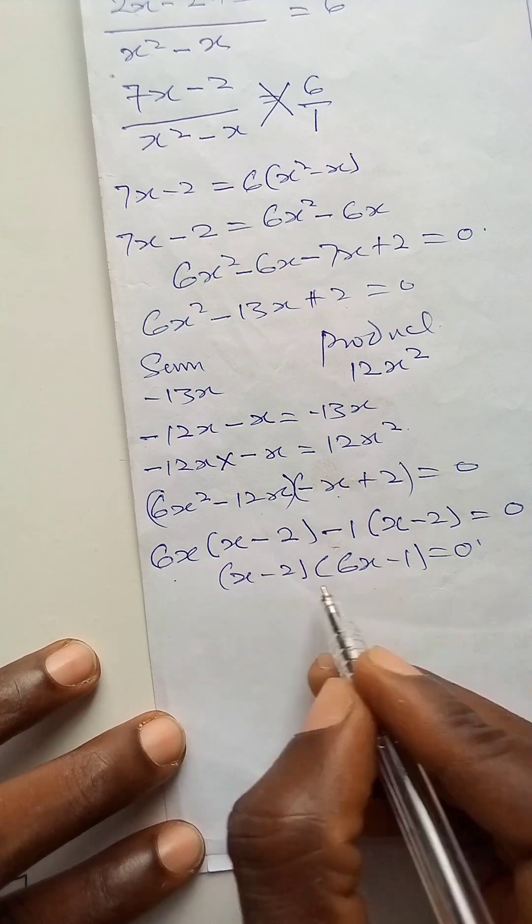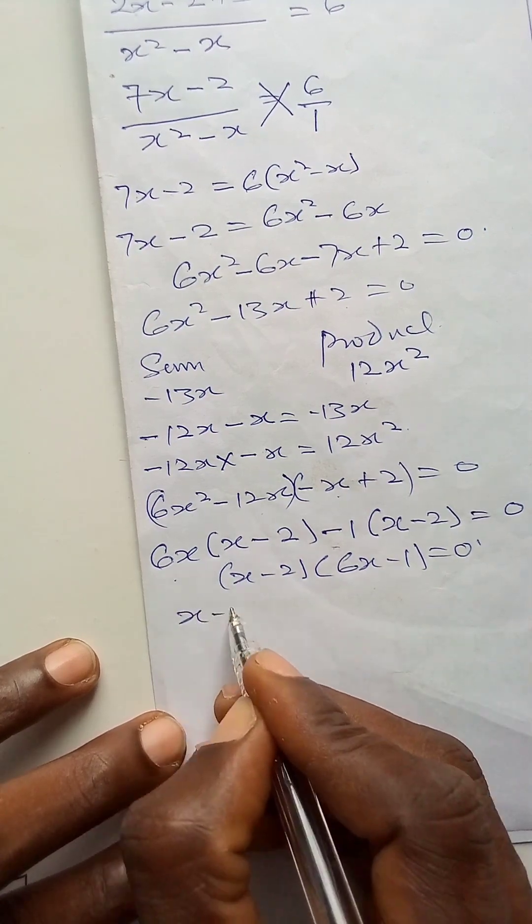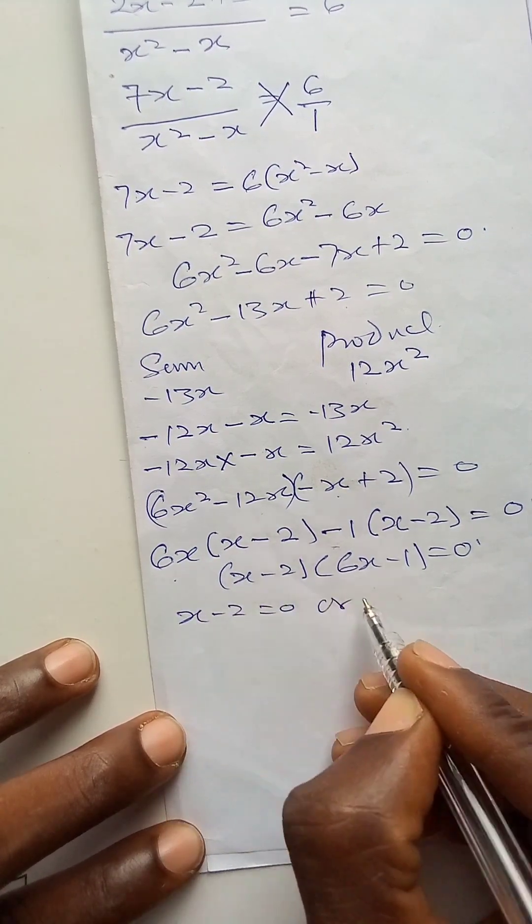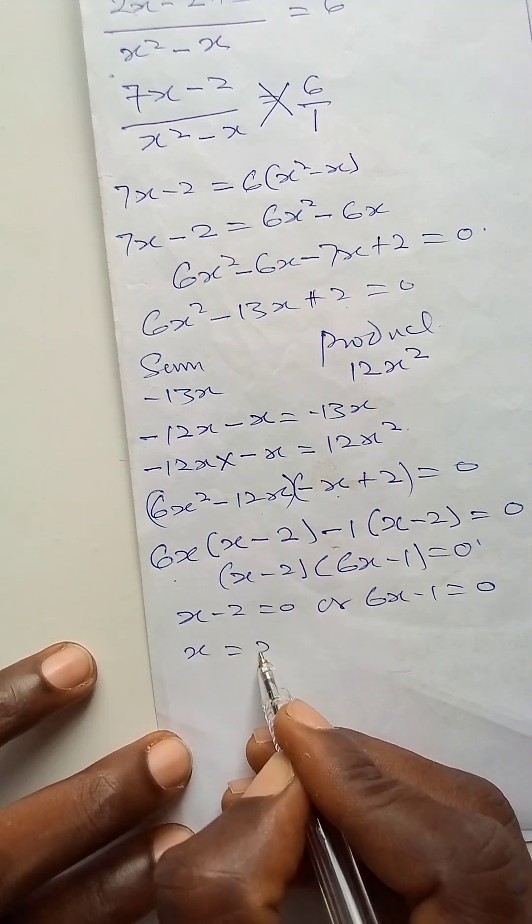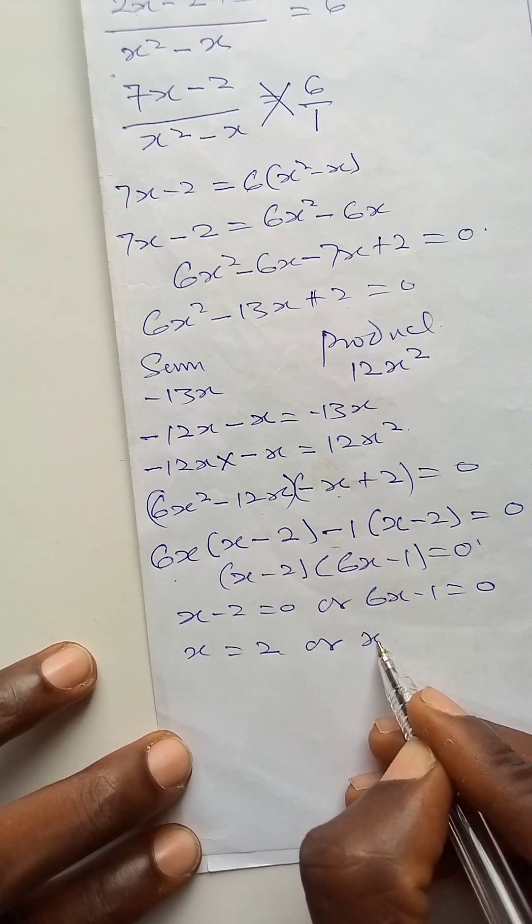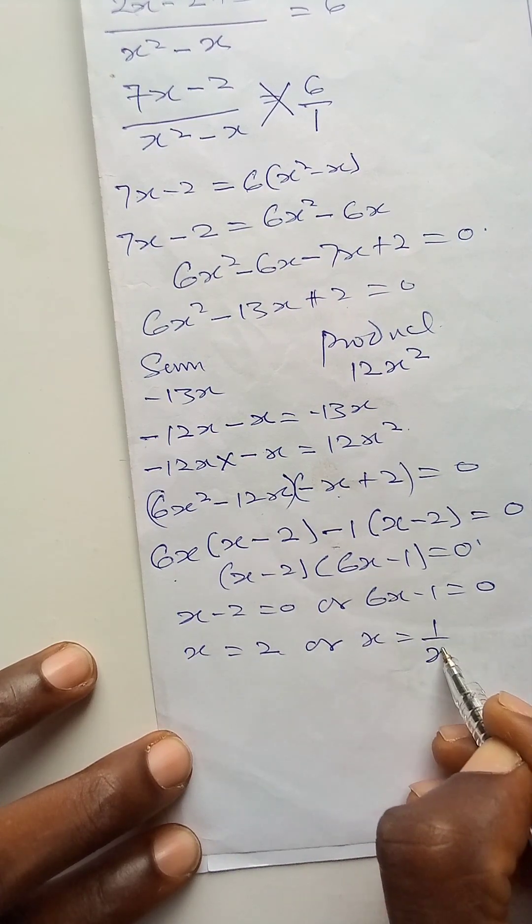Then I will equate both brackets to 0. So x minus 2 is equal to 0, or 6x minus 1 is equal to 0. Then x is equal to 2, or x is equal to 1 over 6.